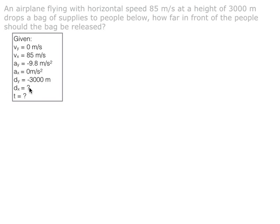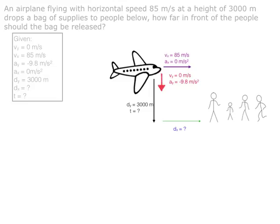In the given box here, we are given all the information that we have and the information that we are trying to find. For this question, we are trying to find d_x, which is this value here, as the question asks how far in front of the people the bag should be released.